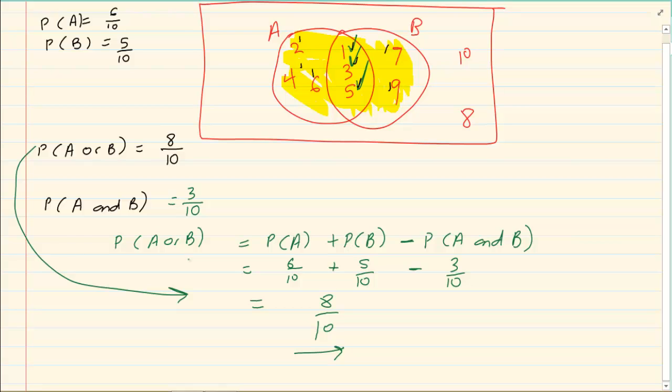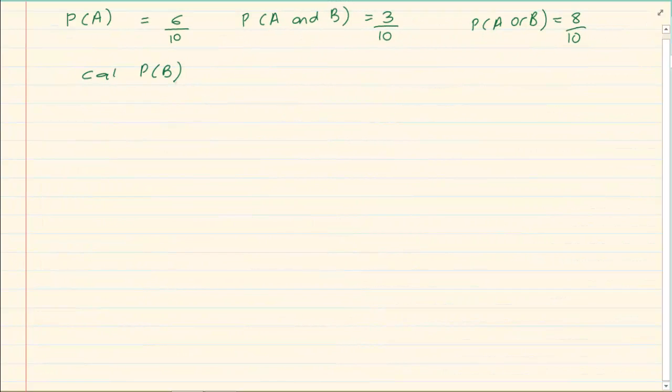Sometimes when they give us questions, they are not going to give us how many is overlapping or they are not going to give us the information. Look at this type of question. Now here they didn't tell us. We don't have a drawing. They are simply giving us values. P of A is this, P of A and B is this, P of A or B is this and calculate P(B).